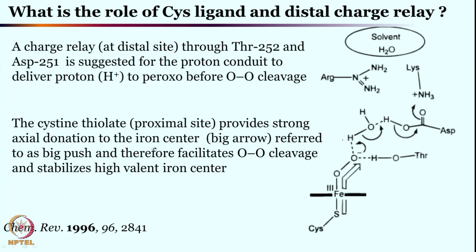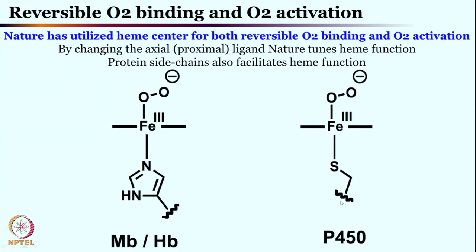The negatively charged cysteine thiolate helps overall in breaking the oxygen-oxygen bond. The cysteine thiolate provides strong axial donation to the iron center — referred to as the 'big push' — and therefore facilitates oxygen-oxygen cleavage and stabilizes the high-valent iron center. Not only does this big push cleave the oxygen-oxygen bond, it also helps stabilize the high-valent iron oxo intermediate formed at the iron center. The role of cysteine thiolate versus histidine in hemoglobin/myoglobin is therefore quite crucial.